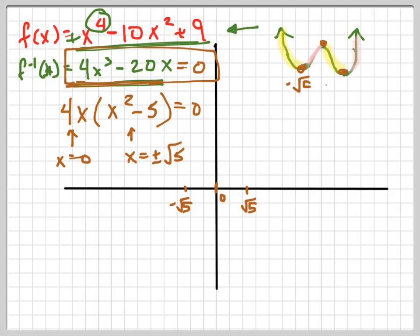So this is negative root 5. This is 0, comma something. And this is positive root 5. If I wanted to find those values, I could, but I don't need to. Because all I need to do is tell them what intervals it's increasing and decreasing.